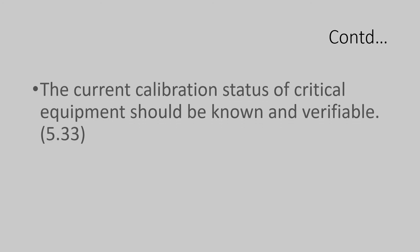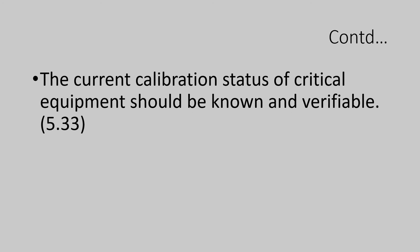Let us see what section 5.33 says: the current calibration status of critical equipment should be known and verifiable. There should be a clear label affixed on the equipment with the details of date of calibration, next calibration date, and the person who carried out the calibration.